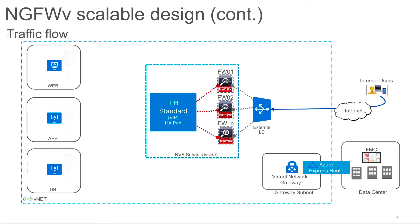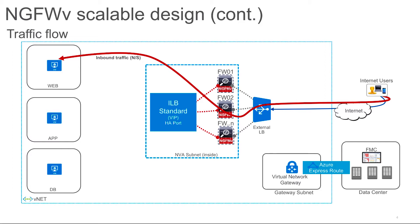Let's talk about traffic flows. A user on the internet will hit your external load balancer front-end IP address. The traffic is received on the external load balancer, which then forwards it based on the load balancing rule. At the time of sending this traffic, the firewall will source NAT it.